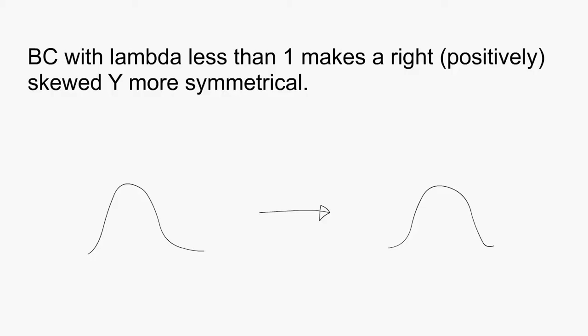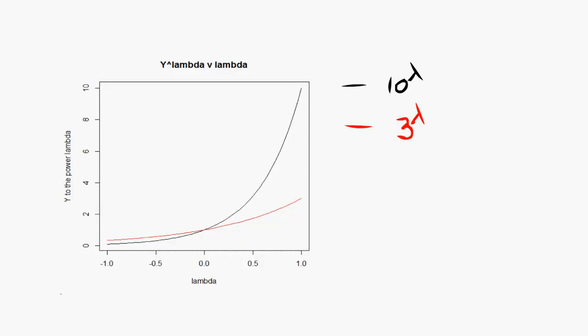Now back to the main story. Why isn't it Y to the power of lambda? Let's try it. The figure shows a plot of two values to the power of lambda. The black line is 10 to lambda. Red line is 3 to lambda. We can see that the order of the data 3 and 10 is reversed when lambda goes from negative to positive values. So this transformation does not preserve order. That's no good guys.